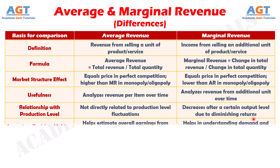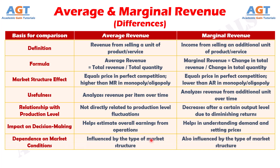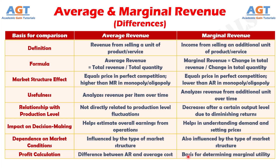Number six: the concept of average revenue is useful for estimating overall earnings from operations, whereas marginal revenue helps in understanding customer demand and setting prices accordingly. Number seven: both average revenue and marginal revenue are influenced by the type of market structure in which the firm operates. Number eight: the profits in a business are the difference between the average revenue and average cost, whereas marginal revenue is the basis for determining marginal utility.